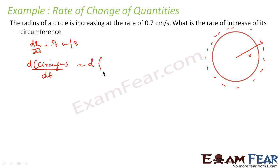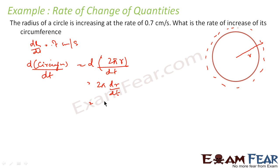What is the formula of circumference? 2πr. So d(circumference)/dt is nothing but d(2πr)/dt, and that is nothing but 2π(dr/dt). The value of dr/dt is 0.7, so this becomes 2π × 0.7, that is 1.4π centimeters per second.